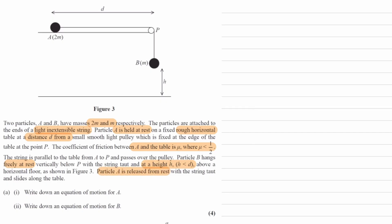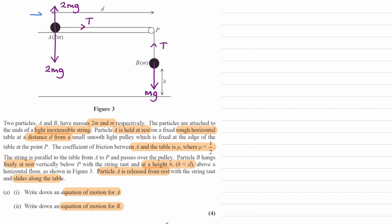Particle A is then released from rest with the string taut and slides along the table. To find equations of motion for A and B, we need force diagrams. B has a weight of mg, and A has a weight of 2mg. There are tension forces T on both objects. Object A is accelerating towards the right, so the resultant force is towards the right.